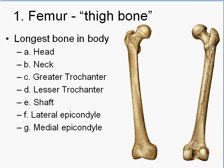Here's the back view of the same bone. The only difference you see when you turn it around are these two little bumps: the lateral condyle and medial condyle. This is what's going to articulate to create the knee.